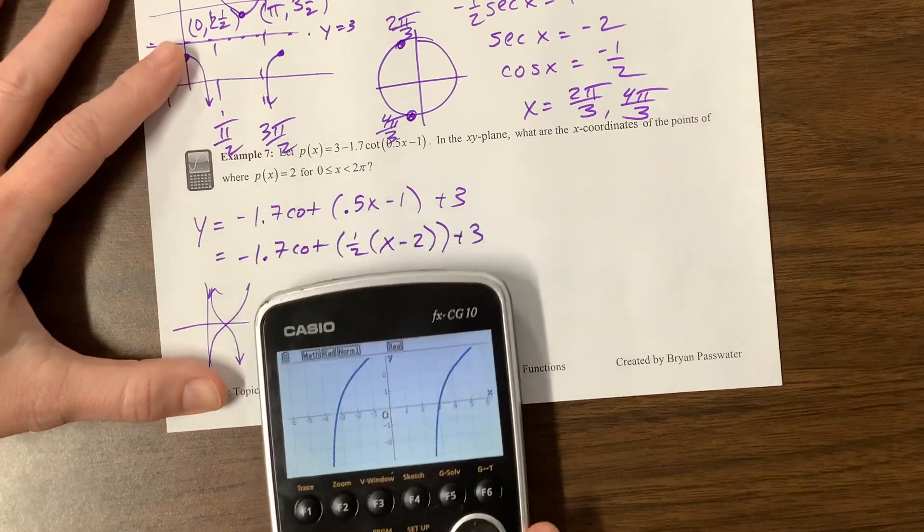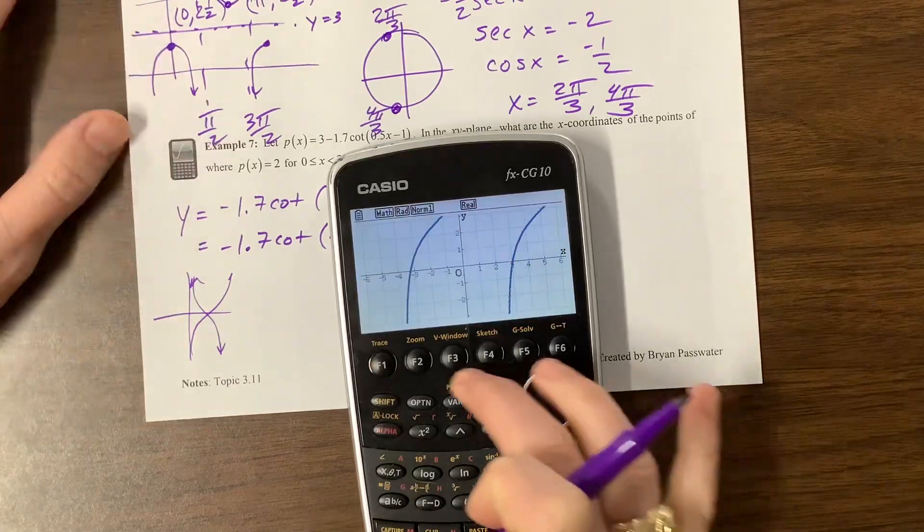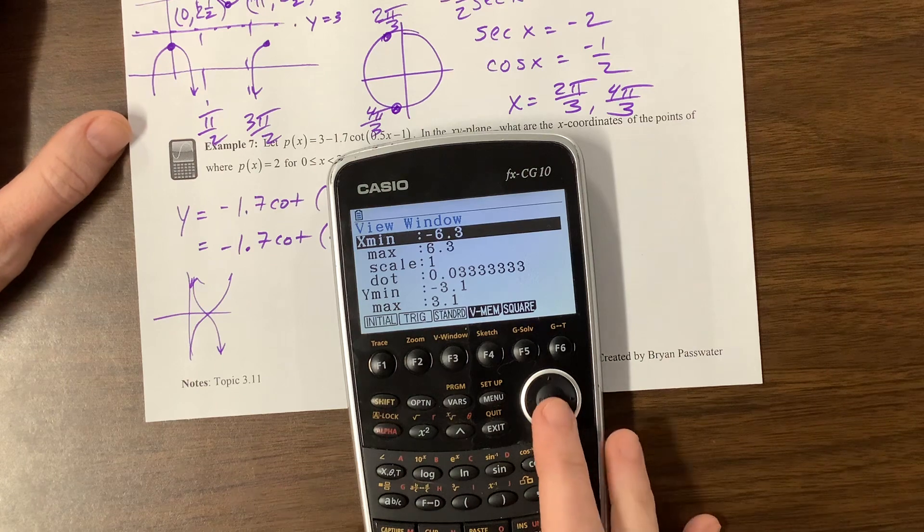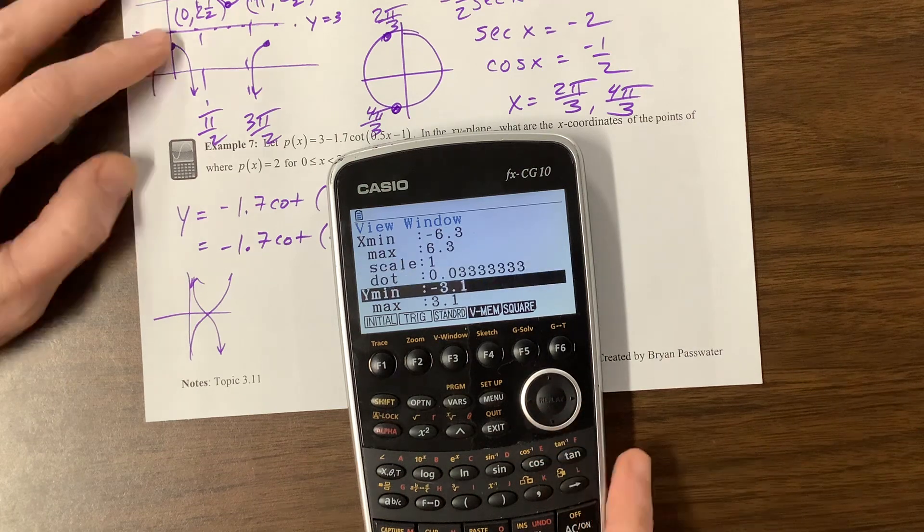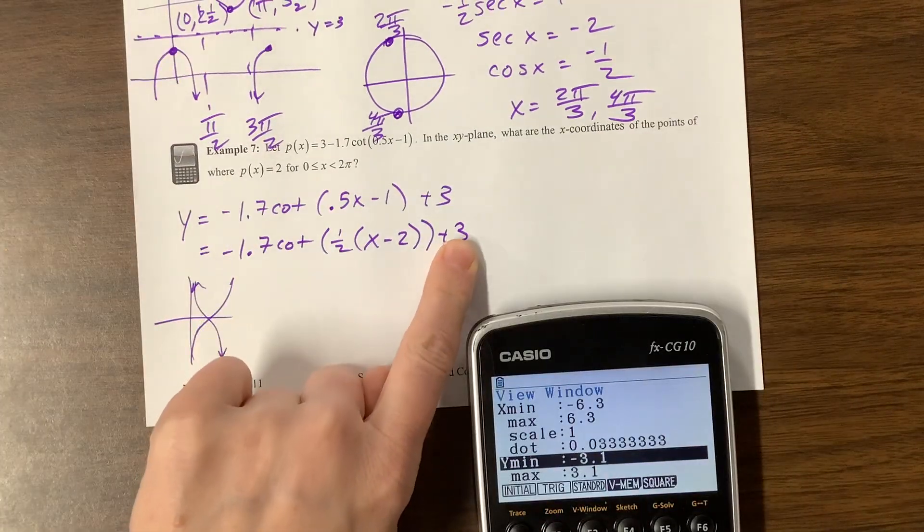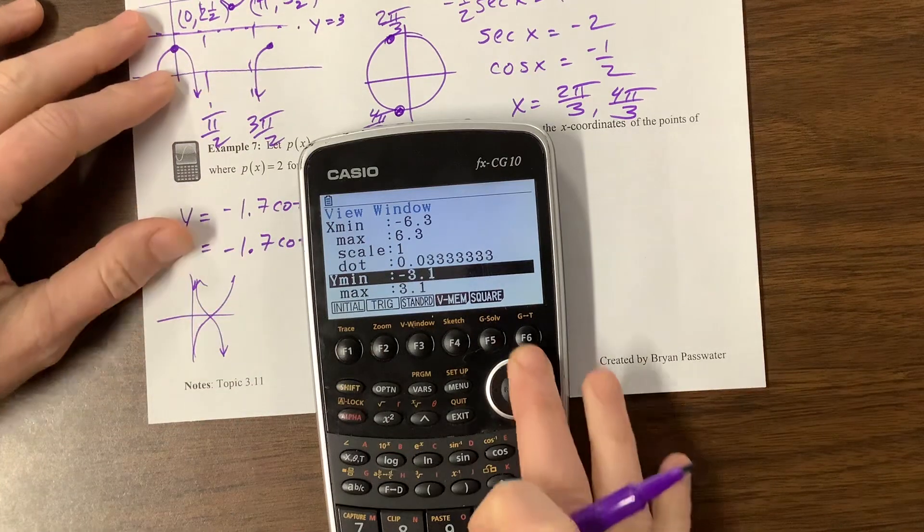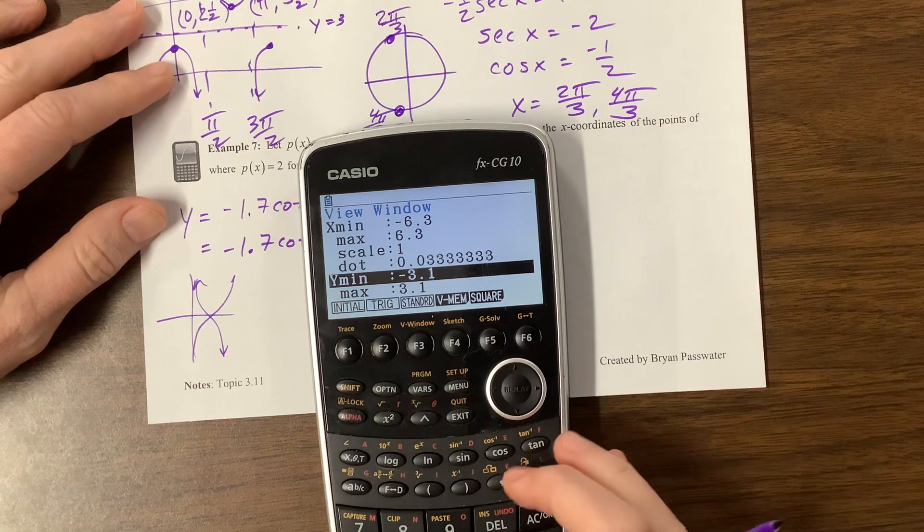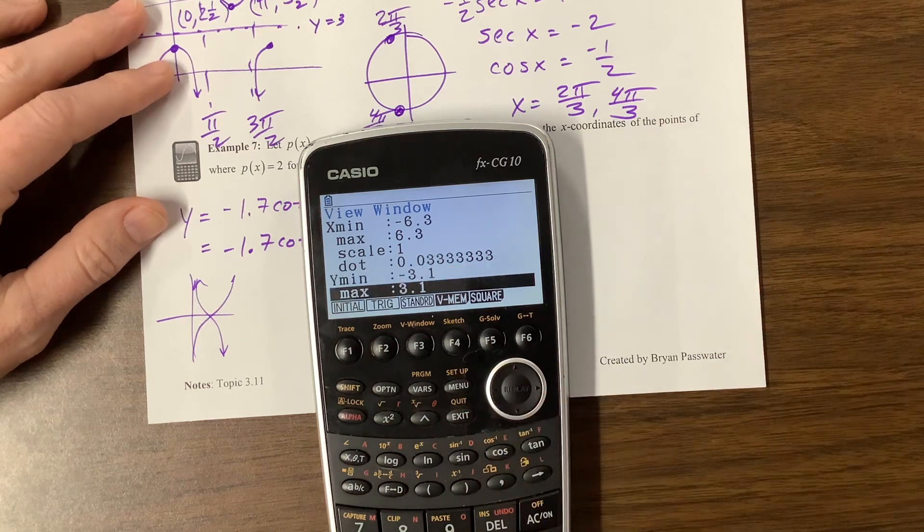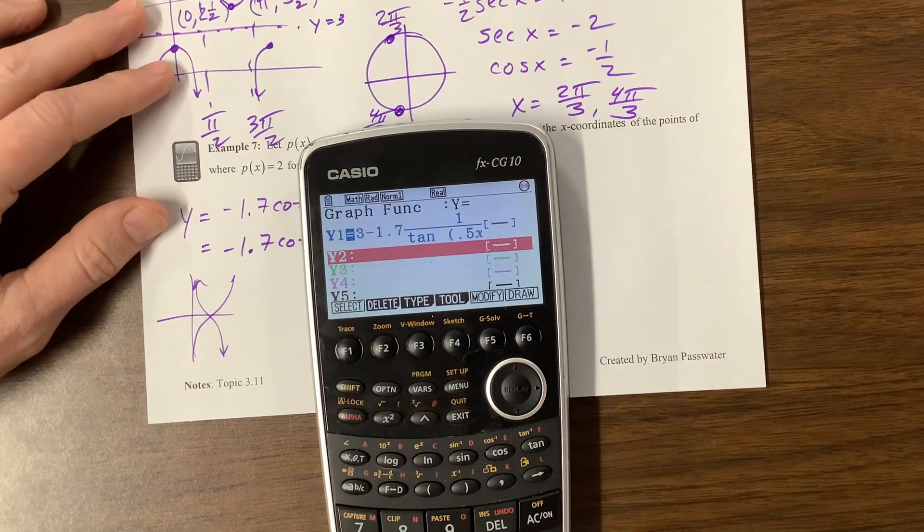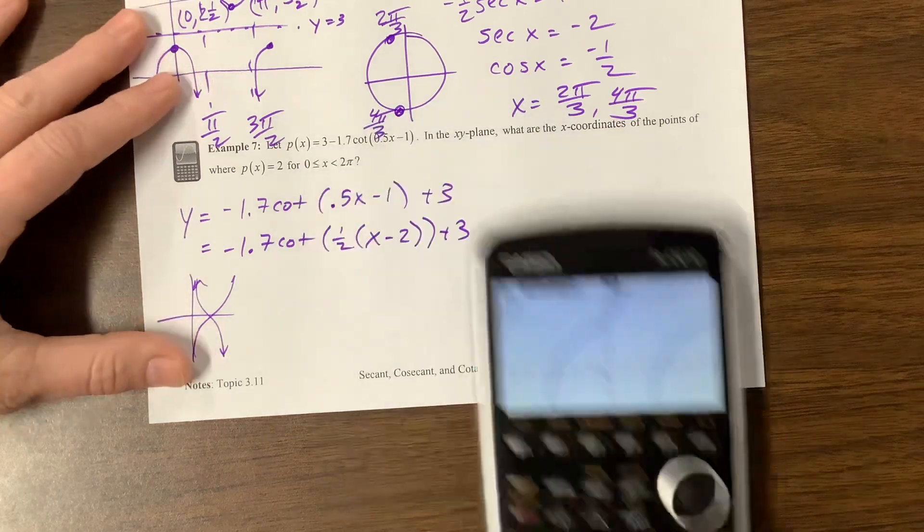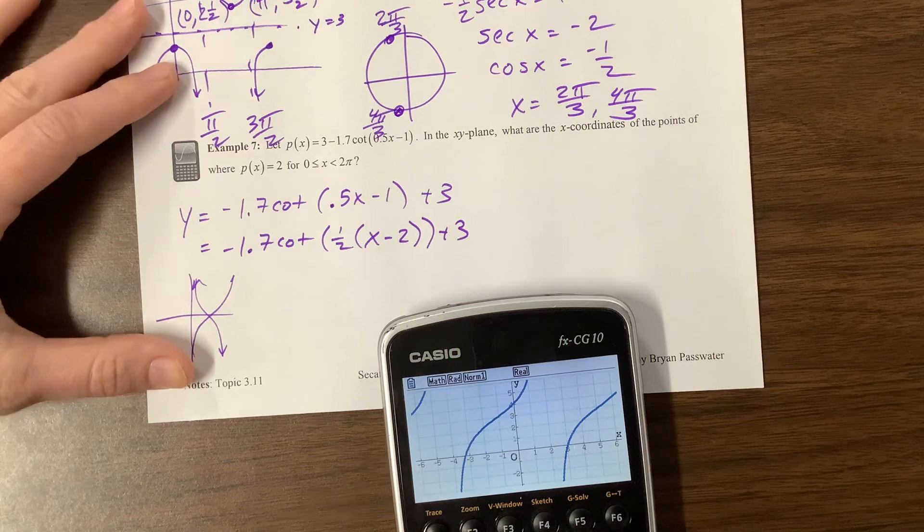So we can hit enter and draw that graph. Let's set a window to something that seems reasonable. A window. It looked like the x values were probably okay, but the y values, I want to go, I need to go up 3. I need to be able to see that the fact that my inflection point changes at 3, so let's go up a little higher, 6, I don't know. And that does look like what we expected.